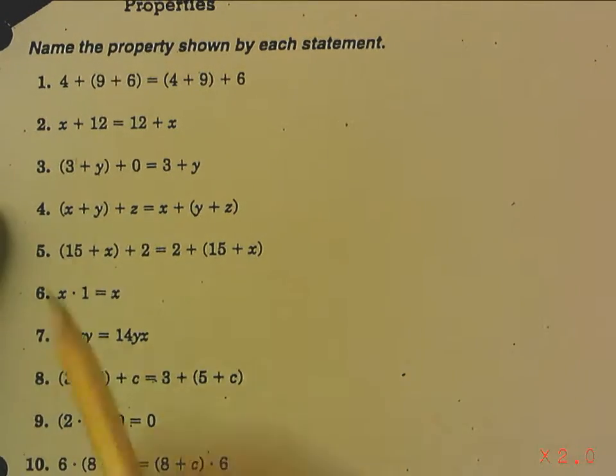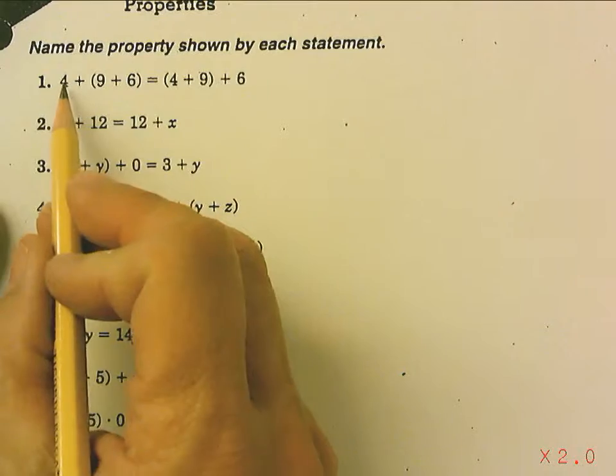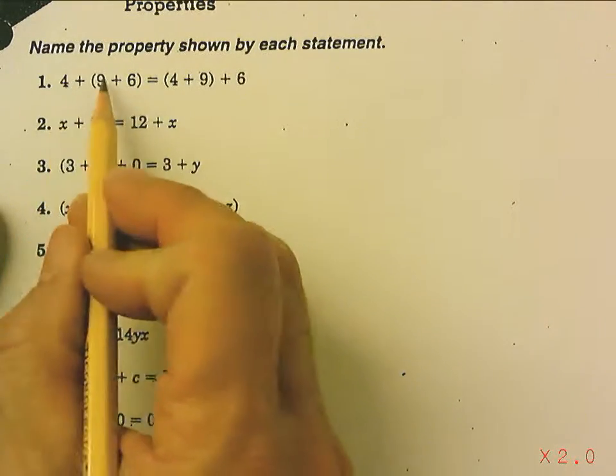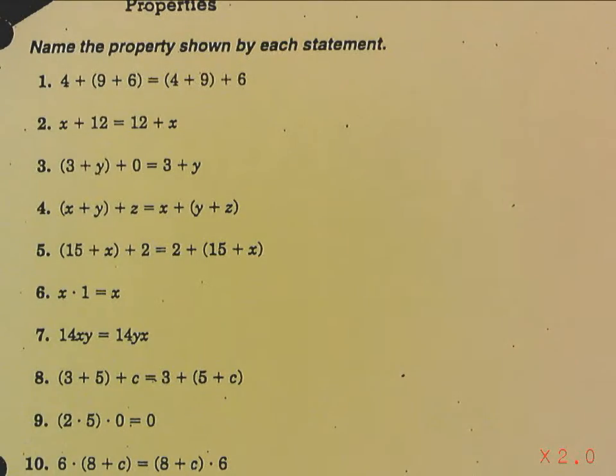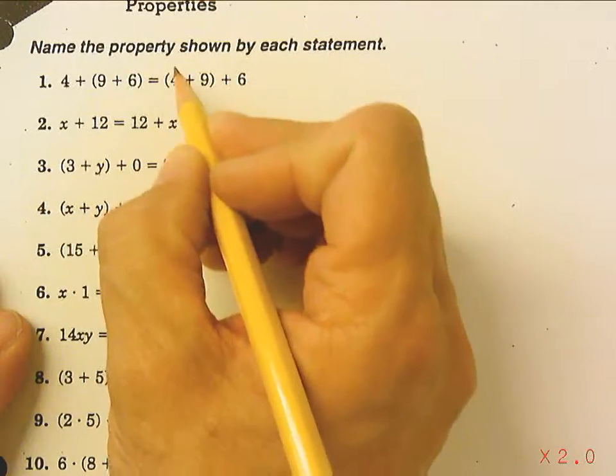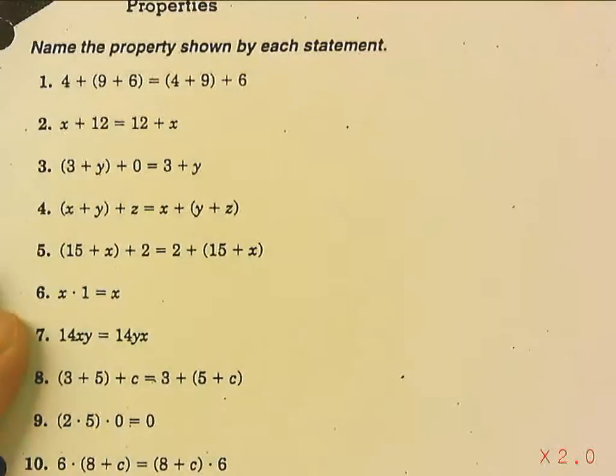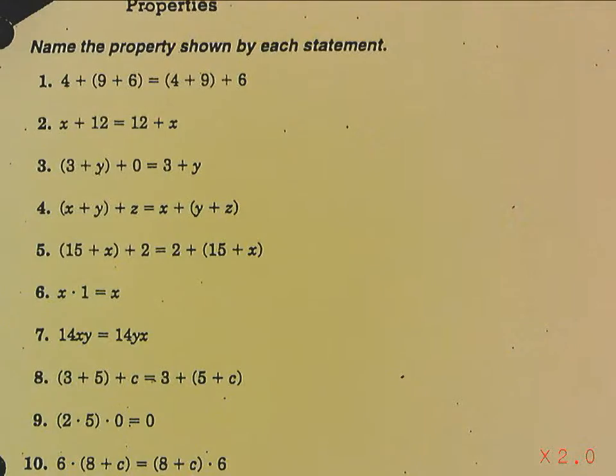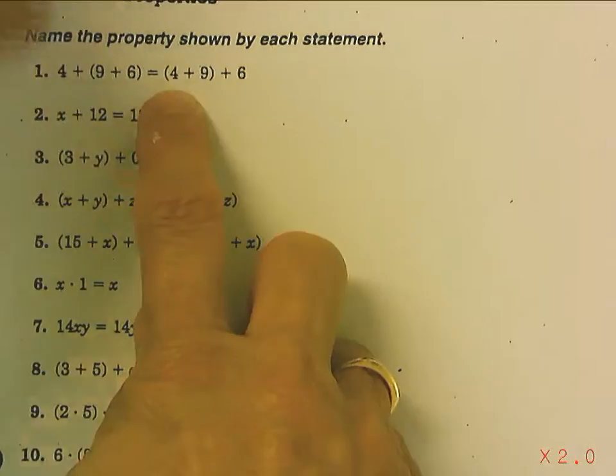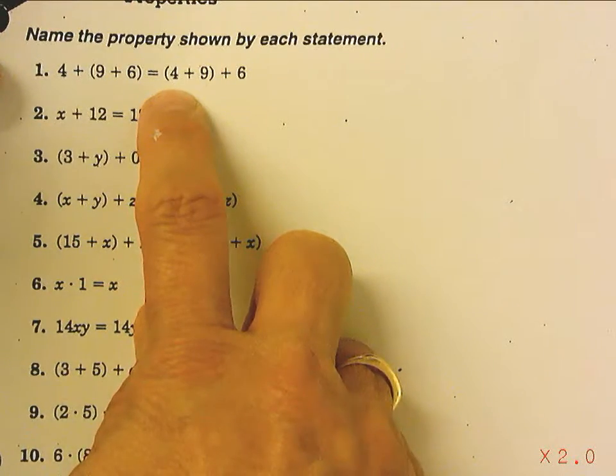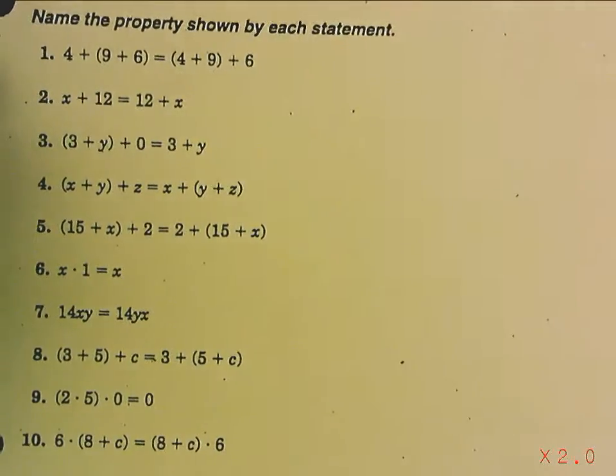Now, number 1, notice for number 1, the numbers 4+9+6, 4+9+6, the order of the numbers does not change at all. What changes is how they're grouped, or the parentheses. When the parentheses moves and the numbers do not move, that is the associative property. And this is addition. So this is the associative property of addition.